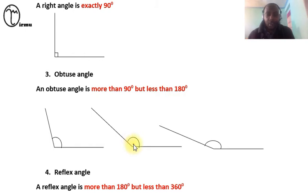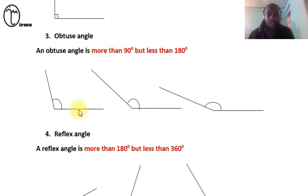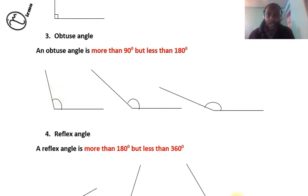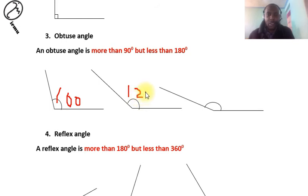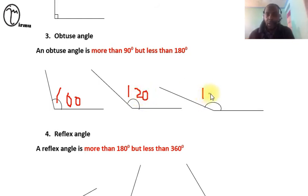An angle that is more than 90 but less than 180 degrees is referred to as an obtuse angle. These three angles are all obtuse — this one is about 100 degrees, this one about 120 degrees, and this one about 150 degrees. So an obtuse angle is more than 90 but less than 180.